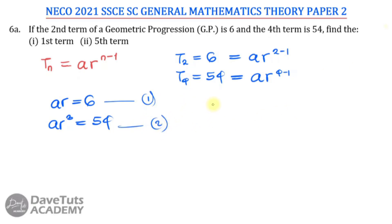To solve this, since it is actually a product, it will be best that we divide. So you can say equation 2 divided by equation 1, and that is going to give us A R cubed over AR equals 54 over 6. From here, you can see that A is cutting out. 6 can go in 54, that is 9. So what we have is R cubed over R, which is the same as R squared, equals 9.